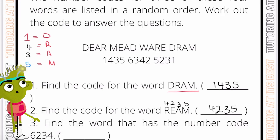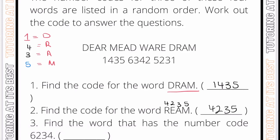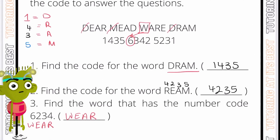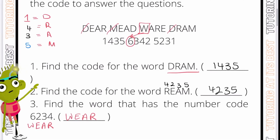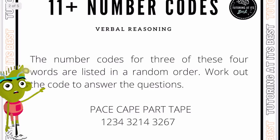Find the word that has the same number code as 6234. We know 2 is E, 3 is A, and 4 is R. We need to find the letter for 6. We've already calculated D and M, so we're only left with W as our first letter — and that is 6. So the answer is 'where'. That's an introduction to your number codes. Let's go into our second set of questions.